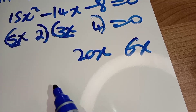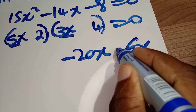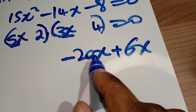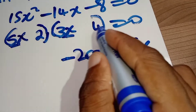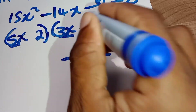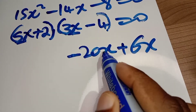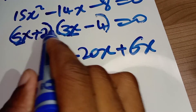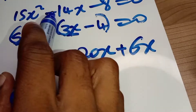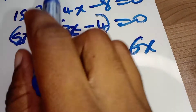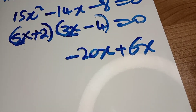But we need negative 14x, so the bigger one should be negative. That means the 20 should be negative and the 6 should be positive, because negative 20x plus 6x gives us negative 14x. Since we got 20 by multiplying 5x with 4, here we should have negative 4 and here positive 2. 5x multiplied by negative 4 gives negative 20x; positive 2 multiplied by 3x gives plus 6x. Combined they give negative 14x. And 2 multiplied by negative 4 gives negative 8 — we have factorized correctly.